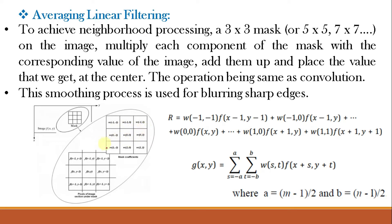The coefficients of the mask are w(−1,−1), w(−1,0), and so on, and the pixels of the image section under the mask are f(x−1, y−1), f(x−1, y), etc. The convolution or sum of products is given by: r = w(−1,−1)·f(x−1, y−1) + w(−1,0)·f(x−1, y) + … and so on. This operation is expressed as g(x,y) = Σ[s=−a to a] Σ[t=−b to b] w(s,t)·f(x+s, y+t), where a = (M−1)/2 and b = (N−1)/2 for an M×N mask.